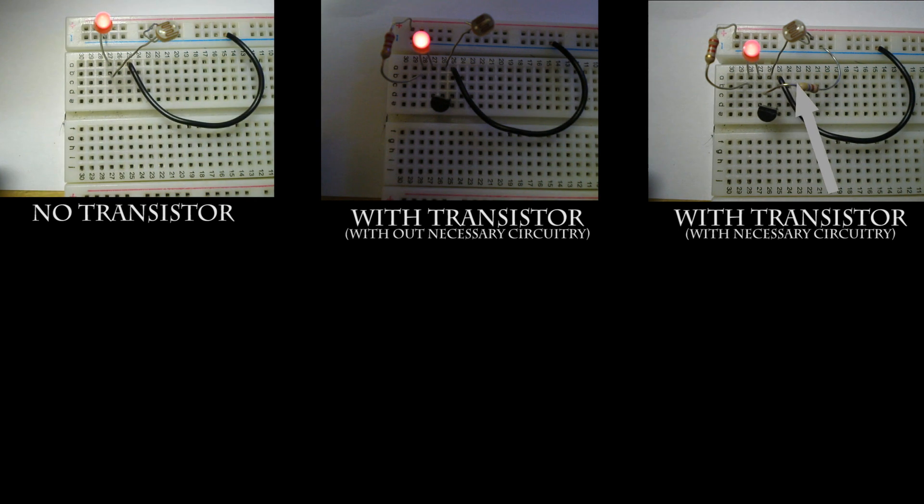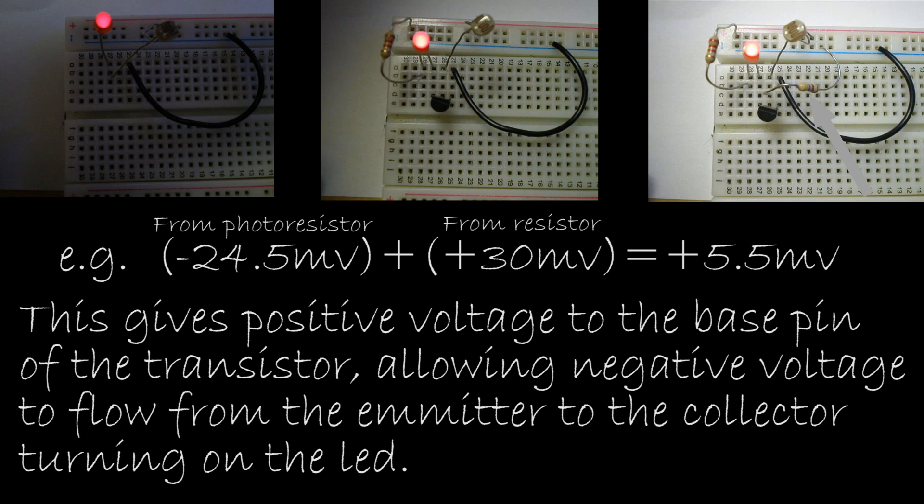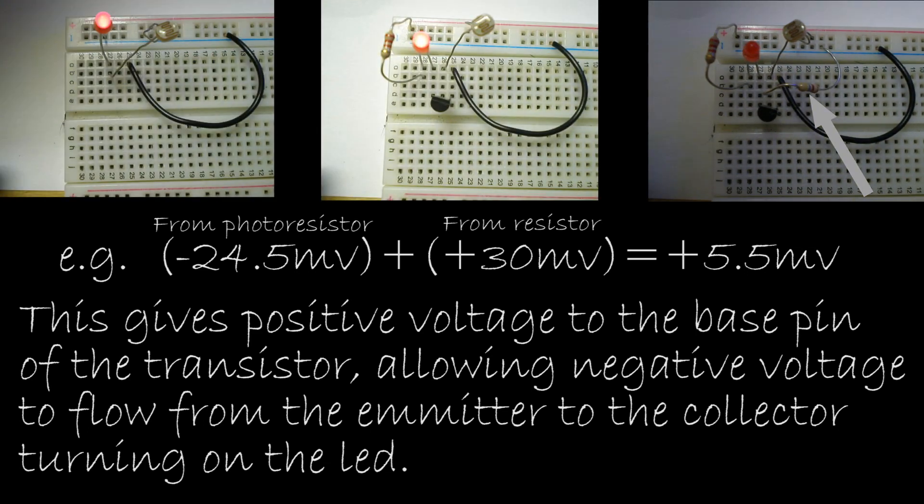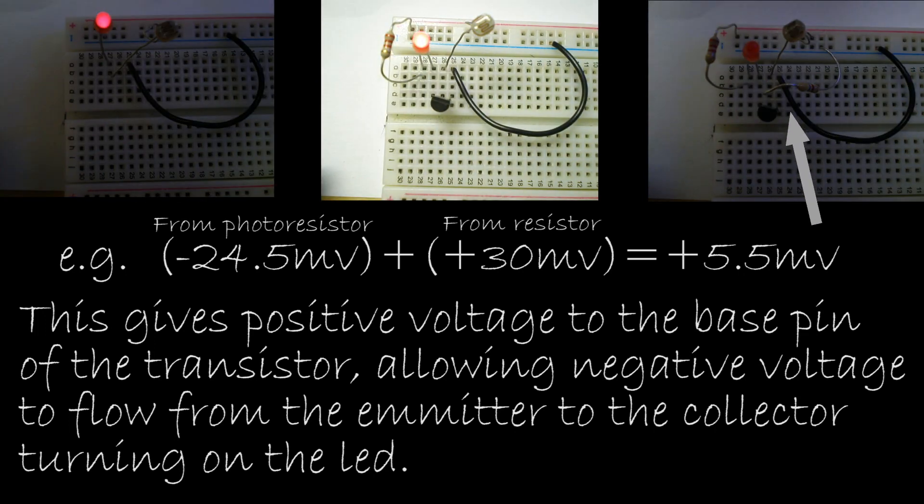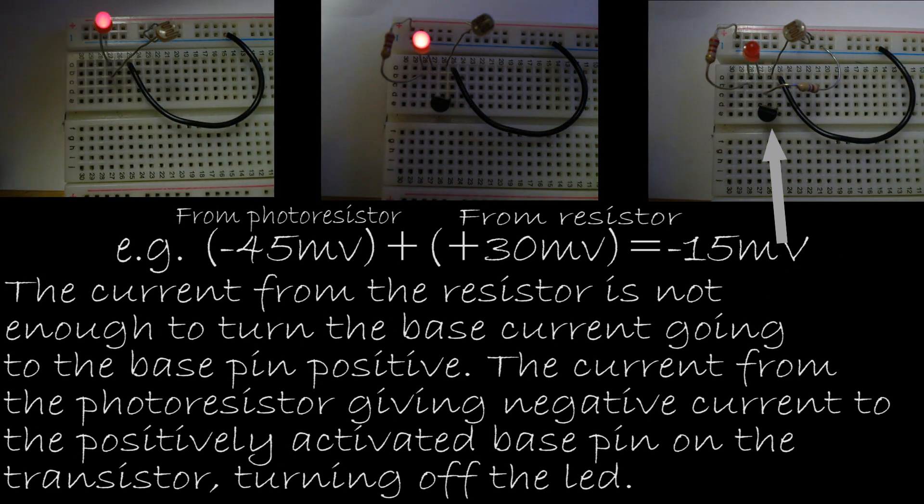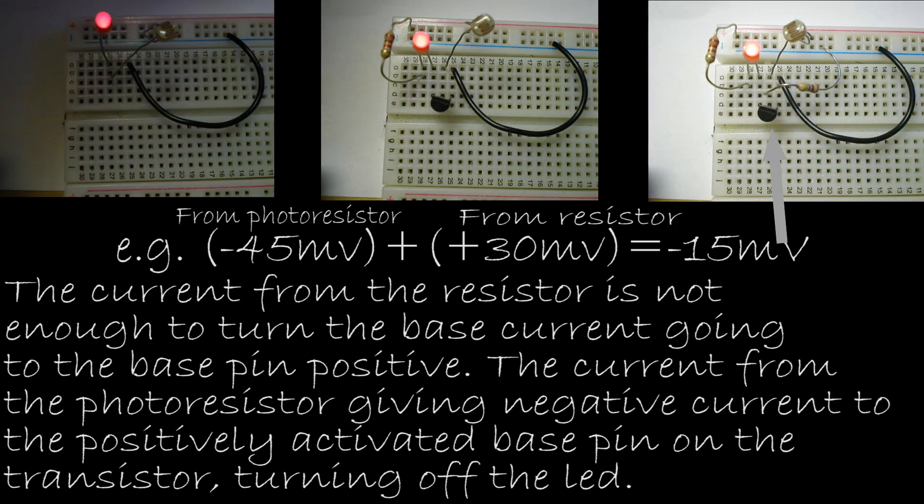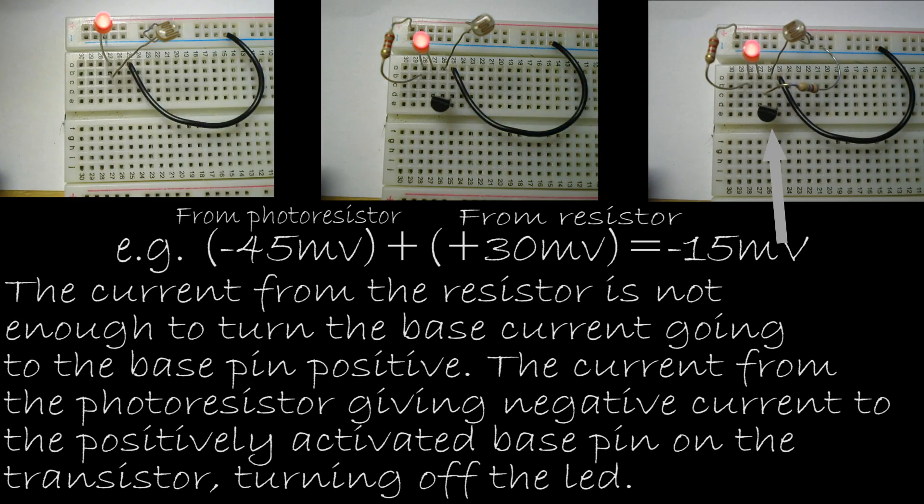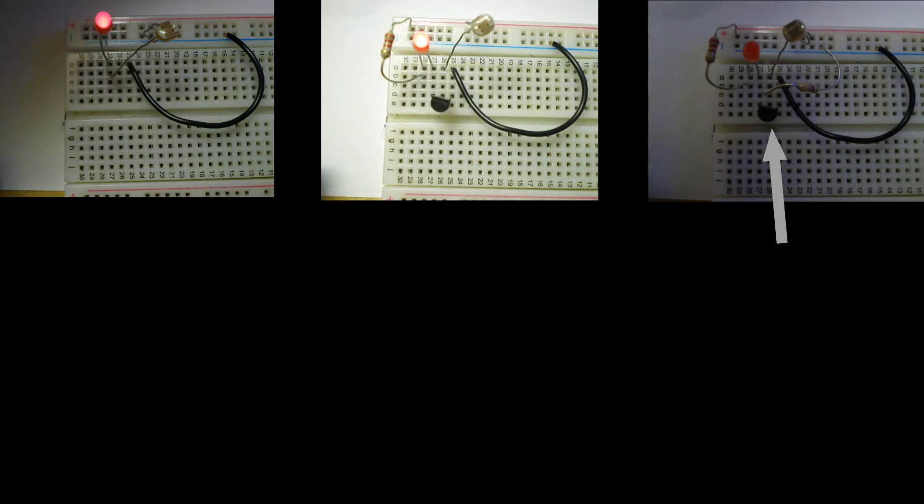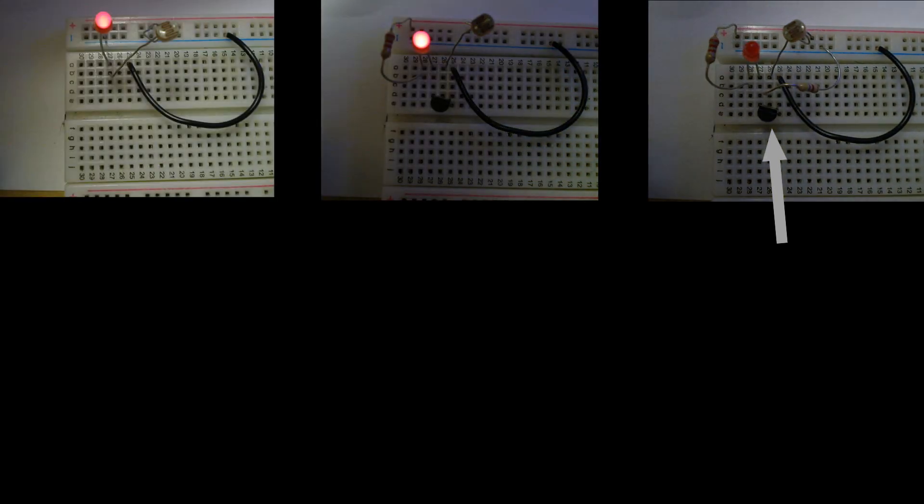This is because I have put a resistor in parallel with the photoresistor. When the photoresistor has light coming to it, the resistance is less than that of the resistor, so positive voltage is flowing to the base pin. However, when the photoresistor is covered, it lets less electricity through than the resistor would, so the electricity flowing to the base pin is negative, because it goes through the resistor. The photoresistor is connected to a positive voltage, and the resistor is connected to a negative voltage.